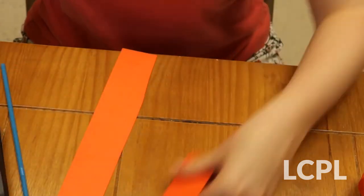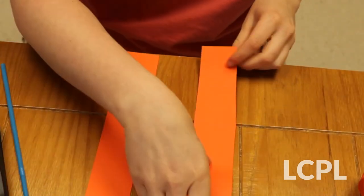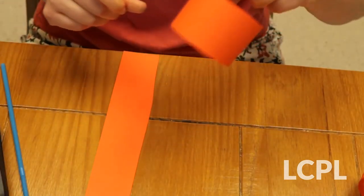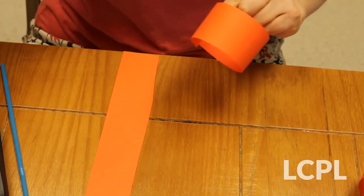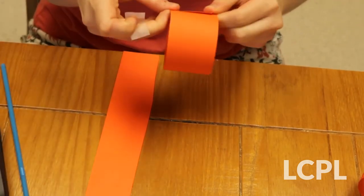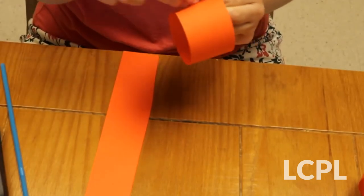All right, so once you have the two strips, you're going to want to take each of them, make them into a circle—don't twist them like in our last craft—and then tape them together.